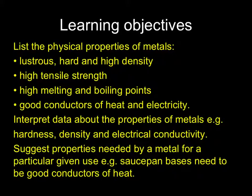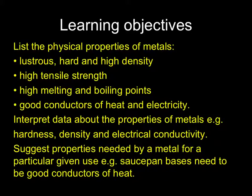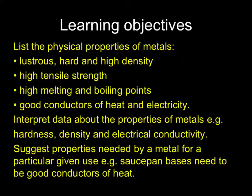You need to know some typical property words for metals. Lustrous means that it is shiny. Hard means that it isn't easily scratched. High density means that it has a high mass compared with its volume. High tensile strength means that cables made out of the metal are strong and will not snap. High melting and boiling points means that a large temperature is reached before they will melt or boil. They are good conductors of heat, allowing heat to travel through them easily, and good conductors of electricity, allowing electricity to travel through them with little resistance.